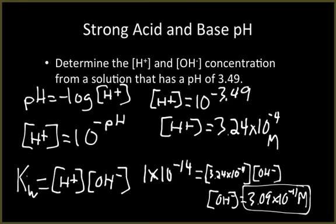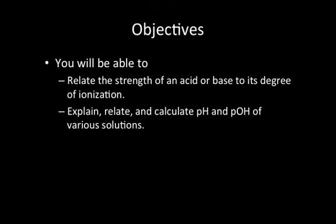These problems really aren't that difficult to solve. You just need to know when to use which formula — similar to our solutions unit. Remember the four formulas we talked about. Hopefully today you're able to relate the strength of an acid or base to its degree of ionization, understand the difference between weak and strong acids and bases, and calculate a multitude of pH and pOH problems. If you have any questions, let me know, and we'll continue working through our acids and bases unit.